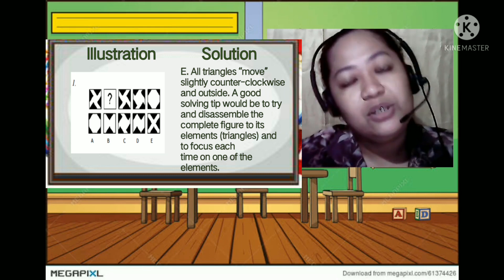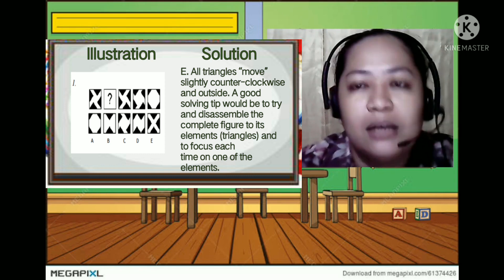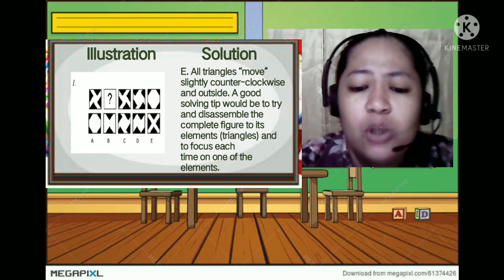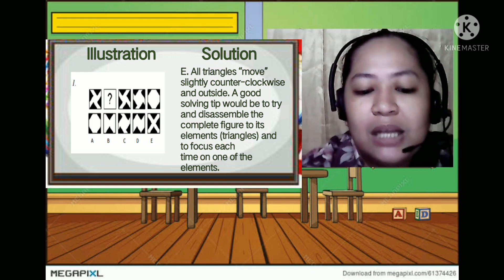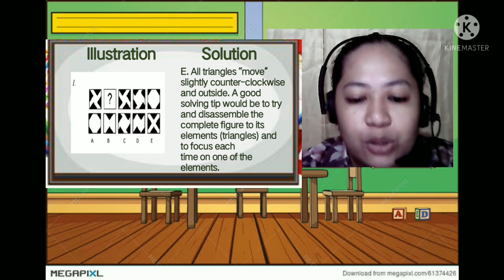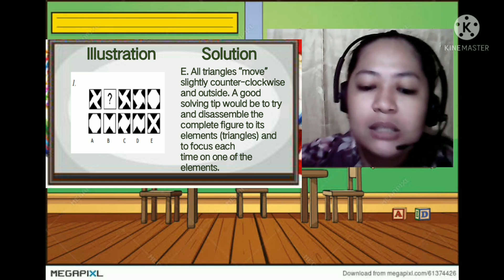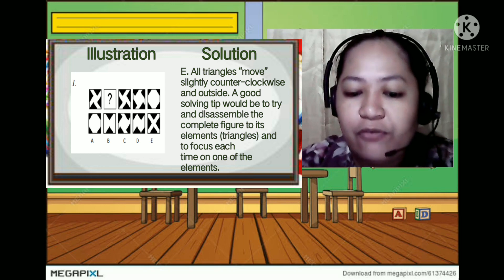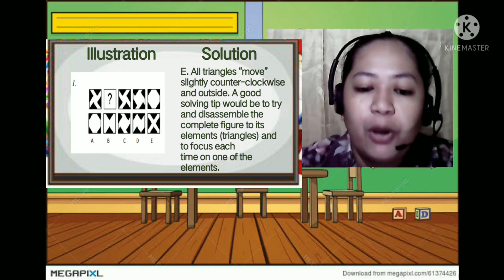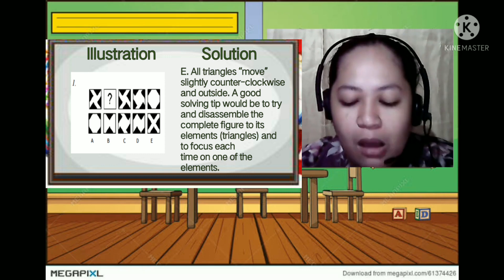So in illustration we will actually see here that there is a shape that actually uses triangles to be more specific. And then as you can see there is the second box which has question mark. So based on this one, on the second part, you will actually select A, B, C, D, or E as the answer to that question mark. So the solution will be letter E. So all triangles move slightly counterclockwise and outside. So a good solving tip would be to try and disassemble the complete figure to its elements and to focus each time on one of the elements. So at the end part we will be able to get that this letter E here is the correct one or the next part for the shapes.